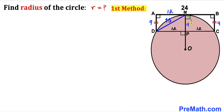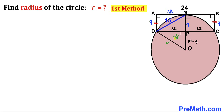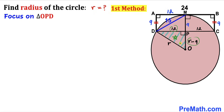We know OM is radius R and segment MP is 9, so OP equals R minus 9. Now let me connect center O with point D. We get right triangle OPD, whose side lengths are 12, R minus 9, and R — where OD is the radius of the circle, also labeled R.